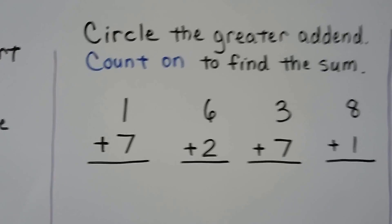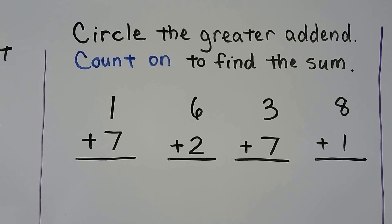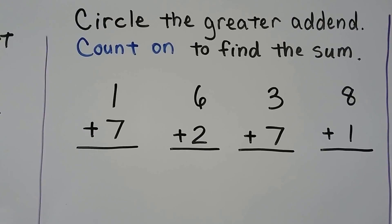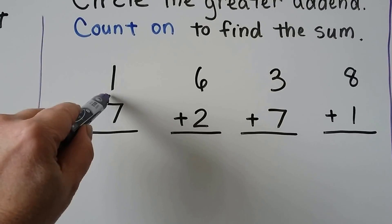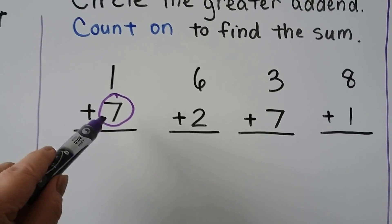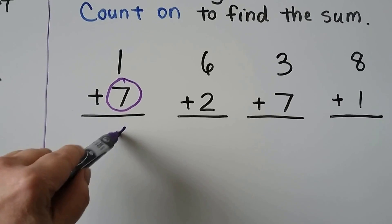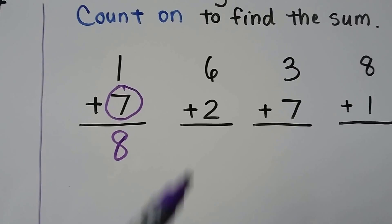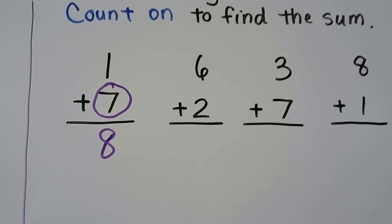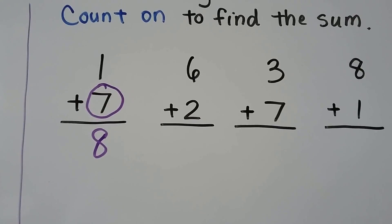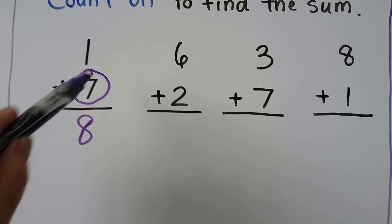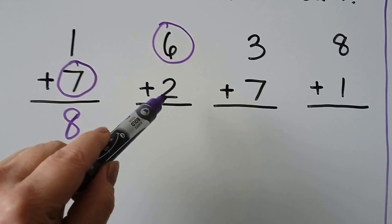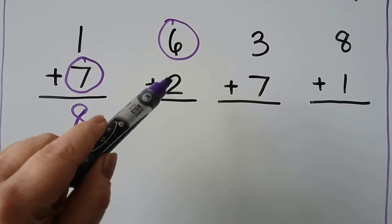We can circle the greater addend and count on to find the sum. 1 plus 7 — the 7 is the greater addend: 7, 8. 1 plus 7 is equal to 8. 6 plus 2 — do you know which one is the greater addend? If you said 6, you're right. We start with the 6 and count on 2: 6, 7, 8.